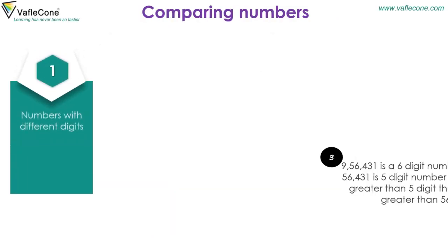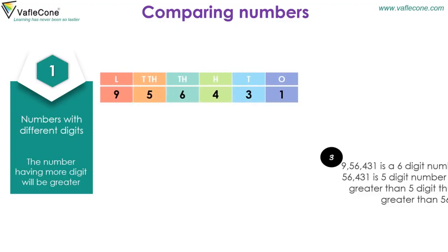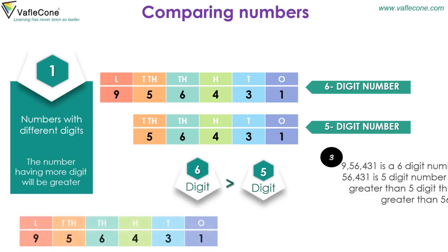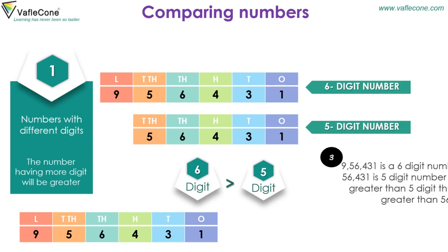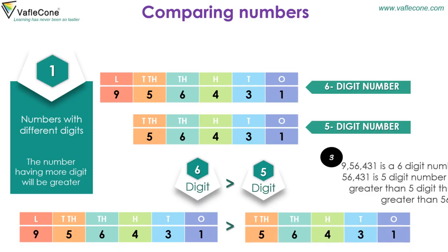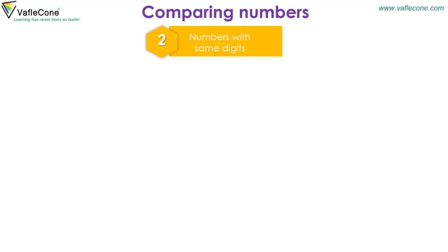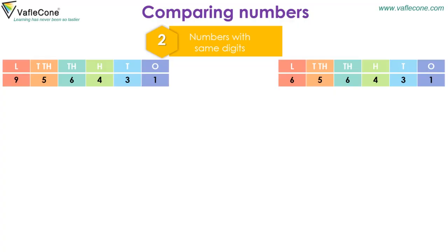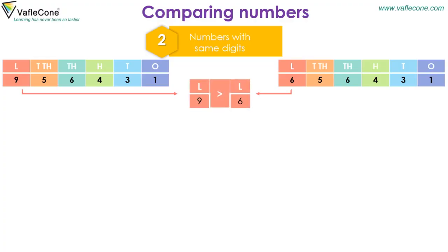Comparing numbers. Numbers with different digits: the number having more digits will be greater. For example, 9,56,431 is a 6-digit number whereas 56,431 is a 5-digit number, and since a 6-digit number is greater than a 5-digit number, 9,56,431 is greater than 56,431. Numbers with the same number of digits: compare the digit at the highest place value. For 9,56,431 and 6,56,431, since 9 is greater than 6, 9,56,431 is greater.